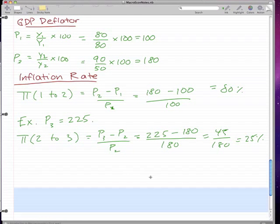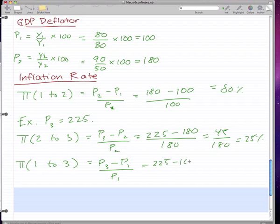And similarly, the π, or inflation rate from 1 to 3, is simply P3 minus P1 over P1, which is 225 minus 100 over 100, which is 125% inflation from year 1 to year 3.